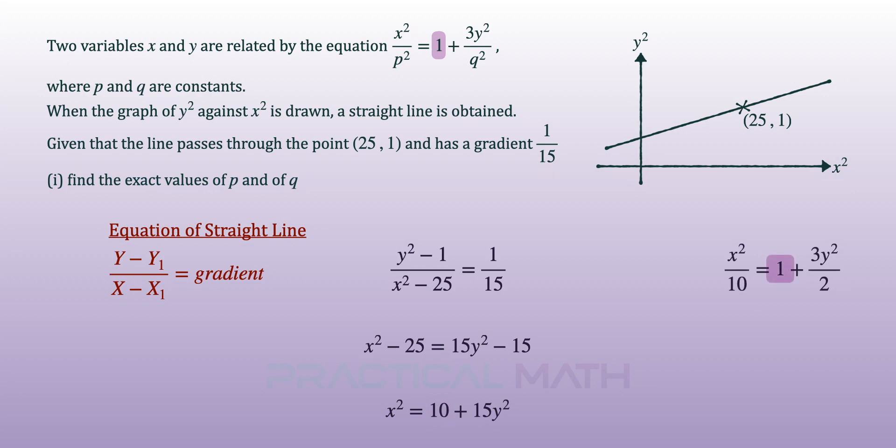We have this equation of x² over 10 to be equal to 1 plus 3y² over 2 and now our constants are the same. Finally, we can do a comparison of coefficient of x² to get p² to be equal to 10 and p will therefore be plus minus square root of 10.